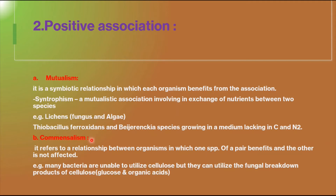The second type of positive association is commensalism. Commensalism refers to a relationship between organisms in which one species of a pair benefits and the other is not affected — neither damaged nor benefited. This kind of association occurs commonly in soil with respect to the degradation of complex molecules like cellulose and lignin.